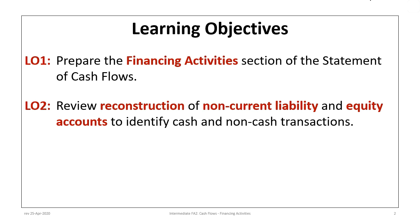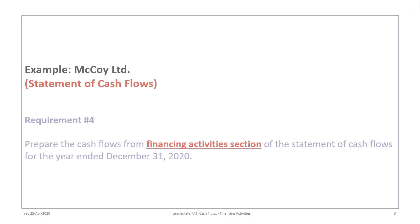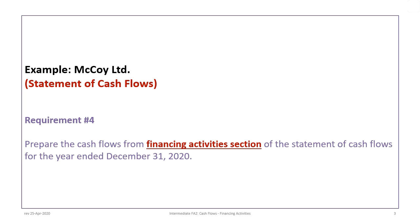If you reviewed Tutorial 19c on the investing section, we did account reconstructions to determine cash flows related to non-current assets. We're going to do the same thing for liabilities and equity. The tutorial continues with the McCoy Limited example, and the requirement is to prepare the cash flows from financing activities for the statement of cash flows for the year ended December 31st, 2020.